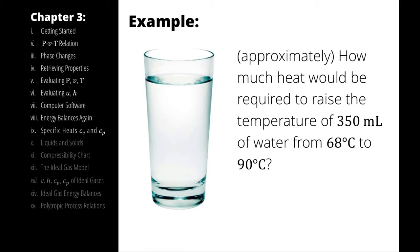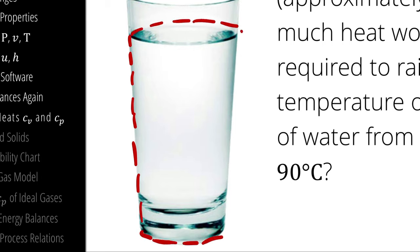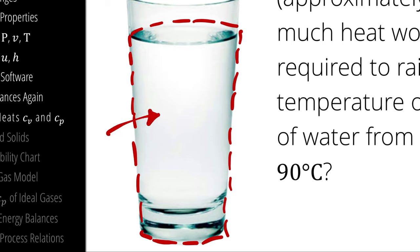Imagine for the moment that I asked you to determine how much heat was required to increase the temperature of 350 milliliters of water from 68 degrees Celsius to 90 degrees Celsius. The way that we would set this up would be to establish a system. I could define my system as the mass of the water, assuming the change in mass is negligibly small, at which point I would have heat entering my system and increasing the temperature.